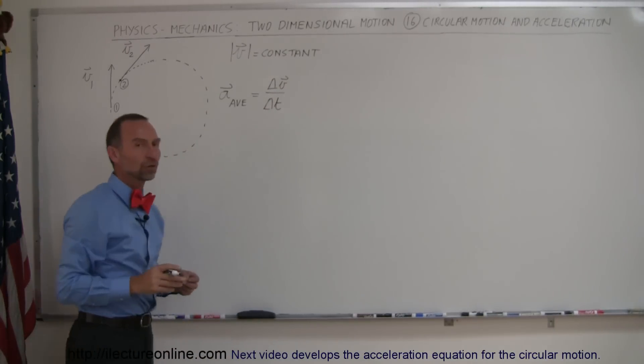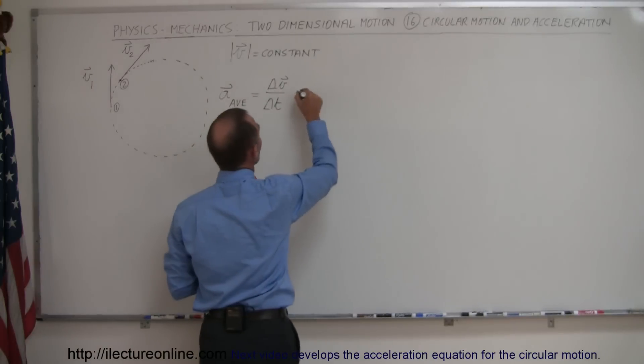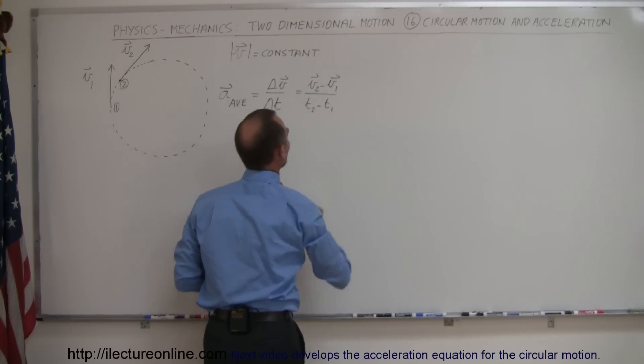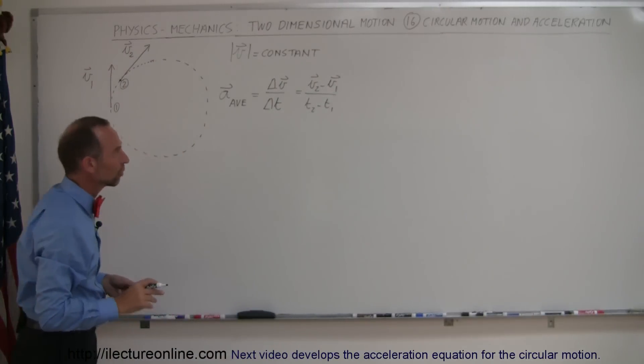And of course the change in velocity can be written as v2 minus v1 divided by the t2 minus t1, the difference in the time at those two locations.